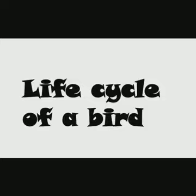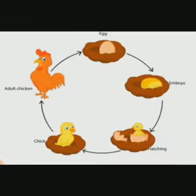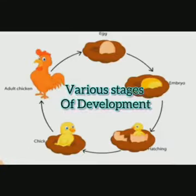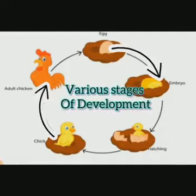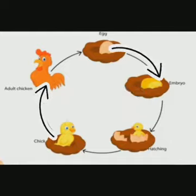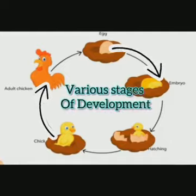The life cycle of an animal or a bird refers to the various stages of development starting from an embryo to a mature adult.